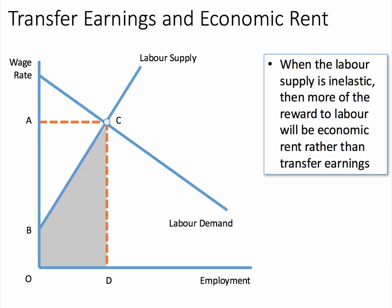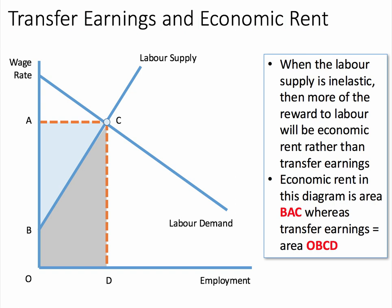Economic rent depends in part on the elasticity of labour supply. When the labour supply curve is inelastic, then typically more of the reward to labour will be economic rent rather than transfer earnings. In this example, I've drawn a fairly inelastic labour supply, and there's the area of transfer earnings in grey, and the area of economic rent in light blue again. The total area is still O, A, C, D, but here the balance has shifted towards economic rent rather than transfer earnings.